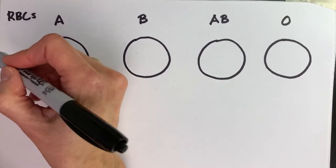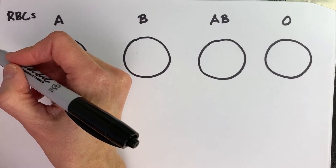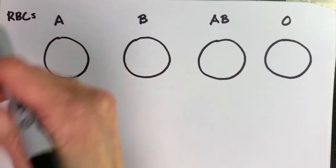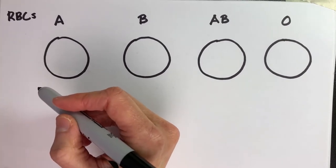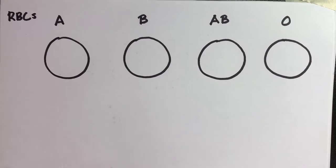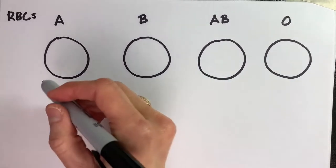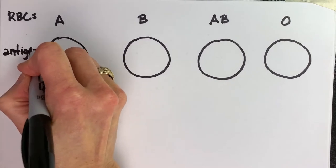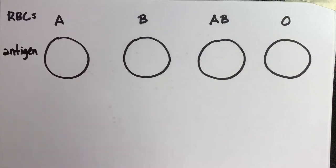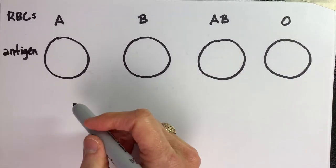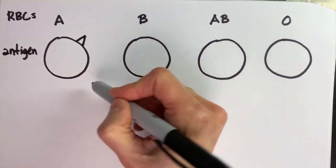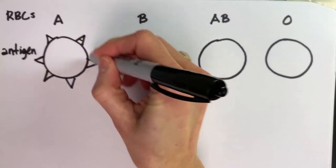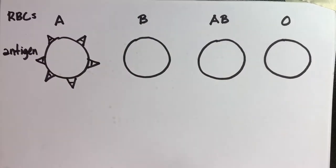And so an antigen is kind of like a name tag. An antigen is an identifier in this case that says I am this type of blood, and your blood cell might have another identifier or name tag on it called an antigen different from mine. So I might have A's on my red blood cells and you might have B's on yours. So let's make this the antigen row. And by that I mean all of these red blood cells are going to have antigens on them.